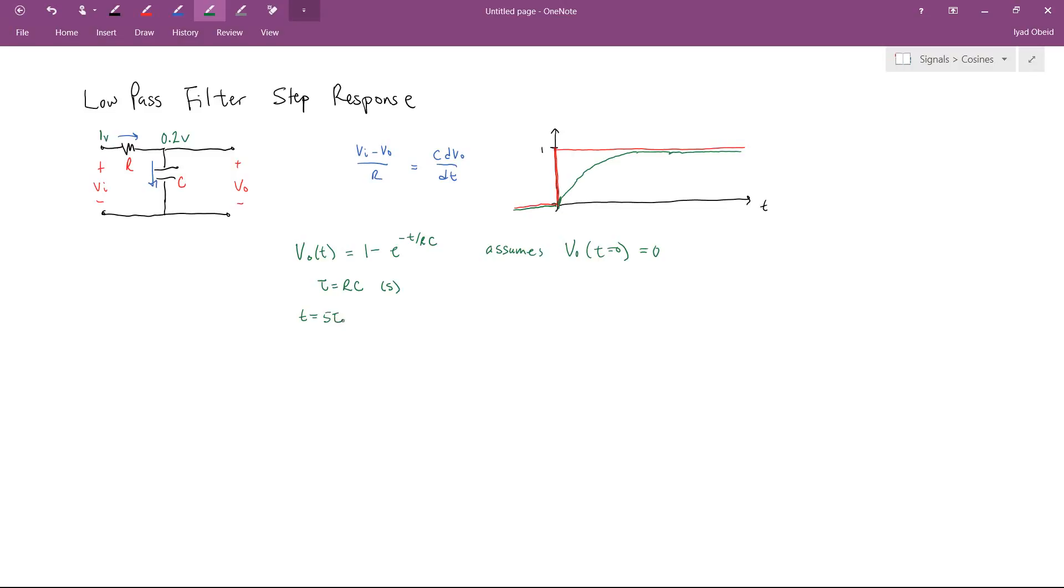then this capacitor will have basically charged up all the way. Keep in mind that it's never truly going to get to 1 volt because it's going to charge asymptotically, but after 5 time constants, we're going to get pretty darn near all the way there.